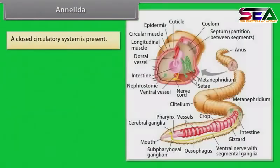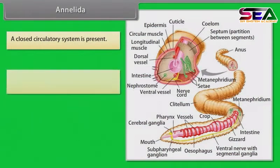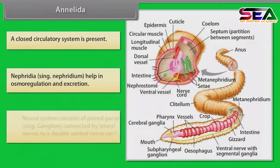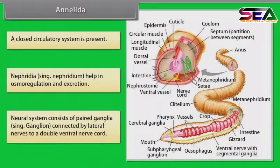A closed circulatory system is present. Nephridia (singular: nephridium) help in osmoregulation and excretion. The neural system consists of paired ganglia (singular: ganglion) connected by bilateral nerves to a double ventral nerve cord.